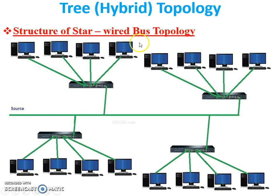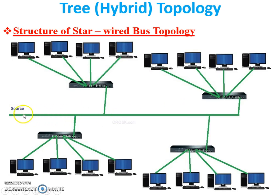The structure of star-wired bus topology: this is a star segment — and there are multiple star topologies here. All these star topologies are connected by a single channel or a bus. So it is bus topology combined with star topology, and this is called hybrid topology or tree topology.